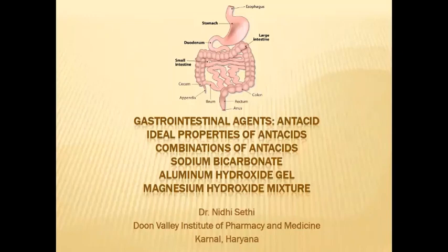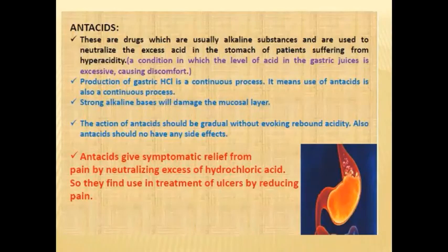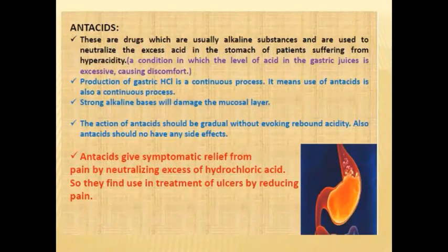Good afternoon students. Today we are going to discuss gastrointestinal agents, which include antacids, their ideal properties, combinations of antacids used, sodium carbonate, aluminium hydroxide gel, and magnesium hydroxide mixture. Antacids are drugs that are usually alkaline substances and are used to neutralize the excess acid in the stomach of a patient suffering from hyperacidity.